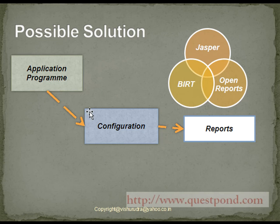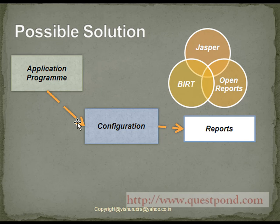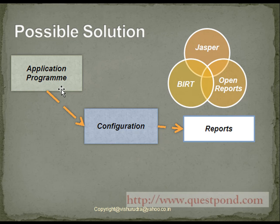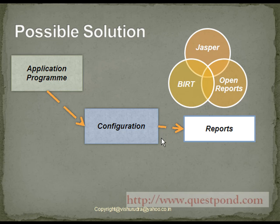One more possible solution is to make use of a configuration file to configure which type of reporting tool we are going to use. The application program will make use of this configuration file to get the report generated from the specific reporting tool. In order to change the reporting tool, we just have to change the configuration file — the application program will not be affected. This is an example of a loosely coupled application, and the configuration file gives us something known as dependency injection. The application program just says what it wants, and the configuration file and the underlying framework get it done.